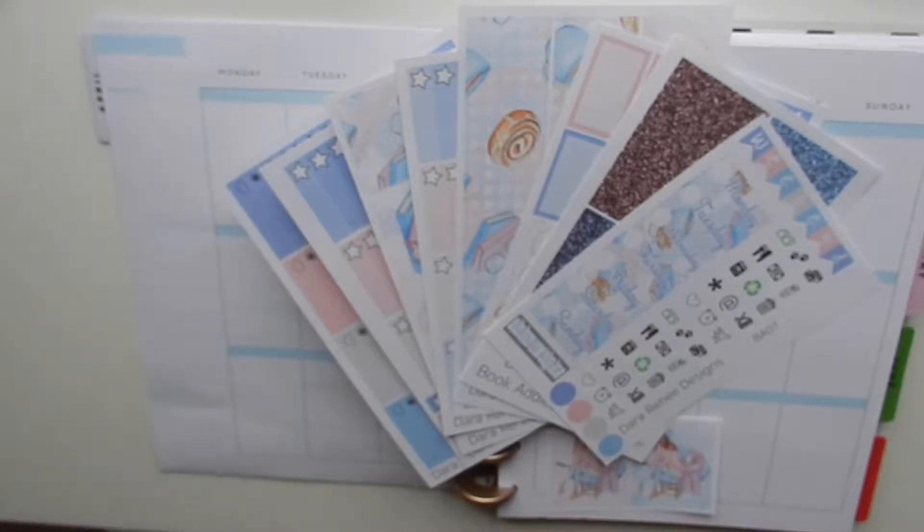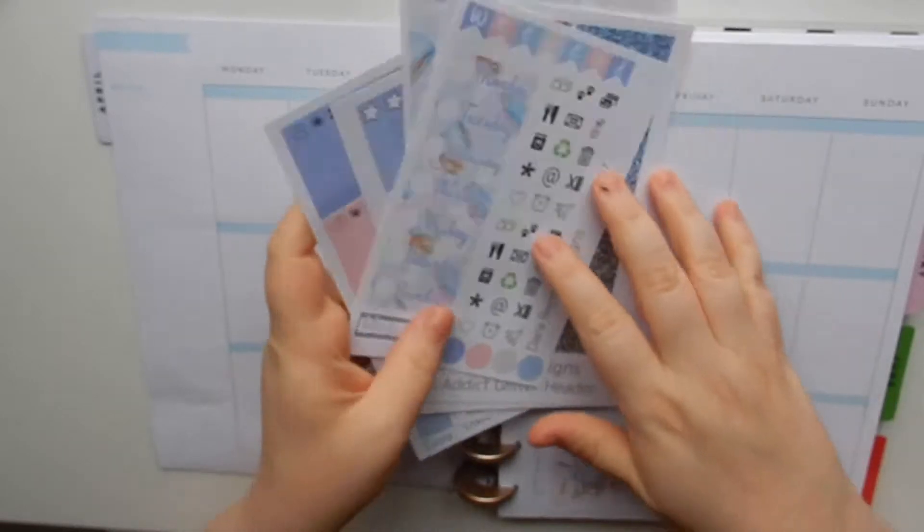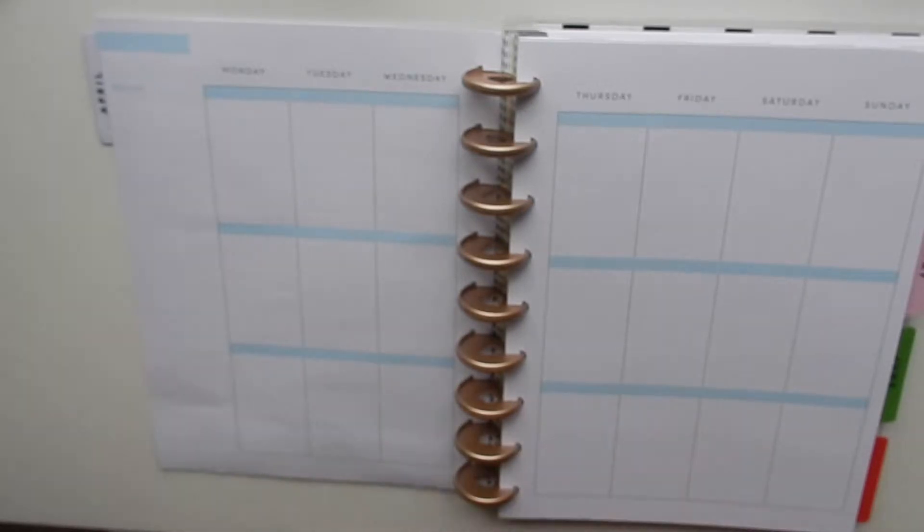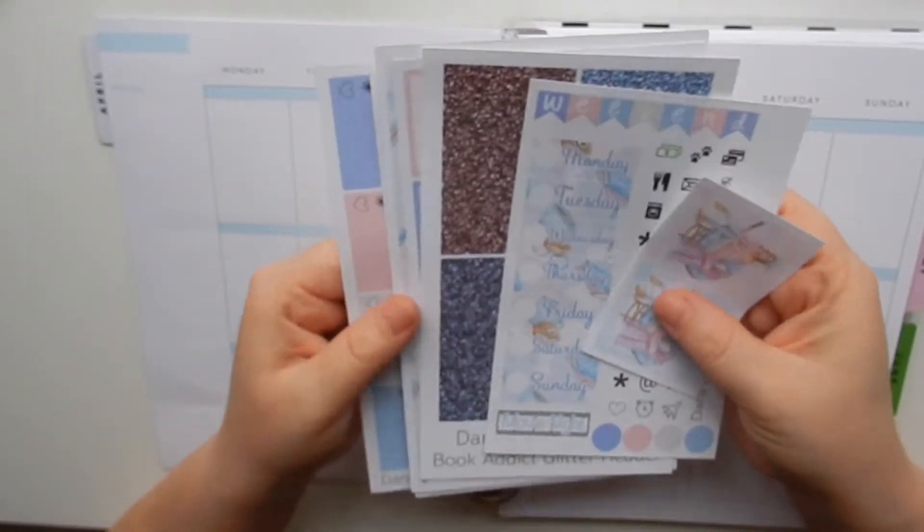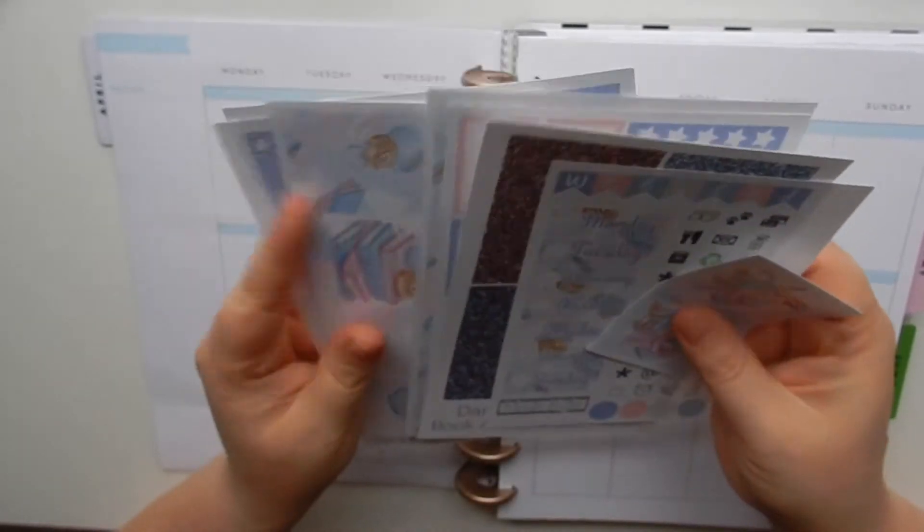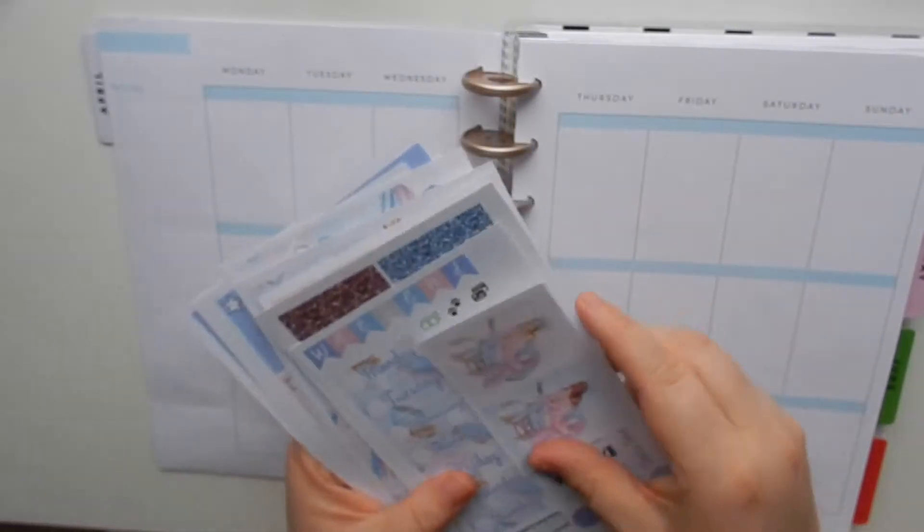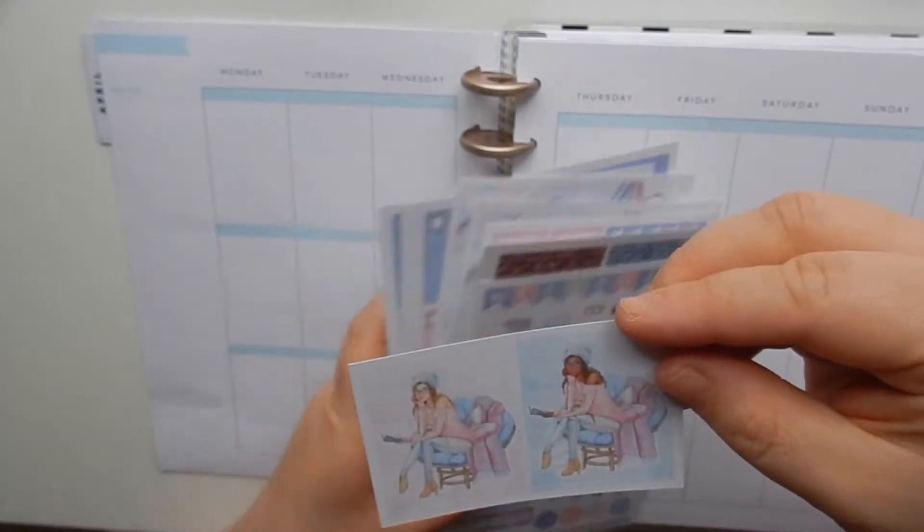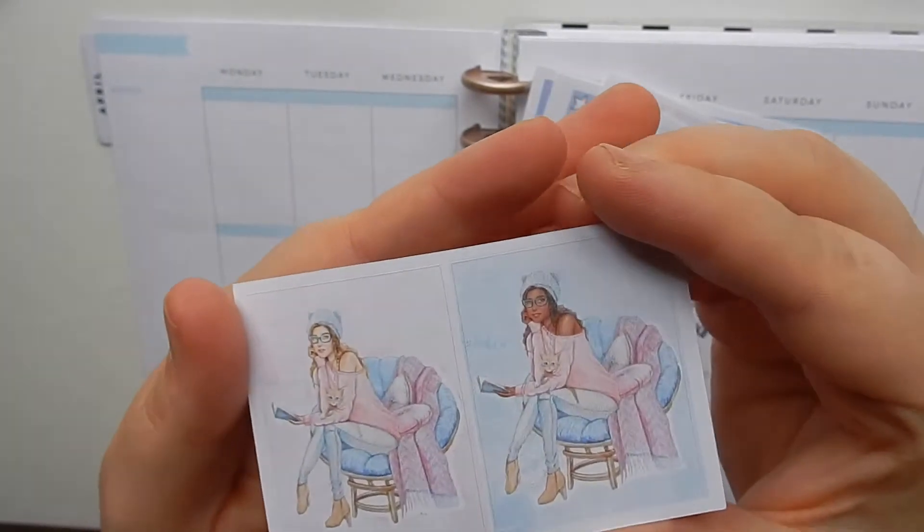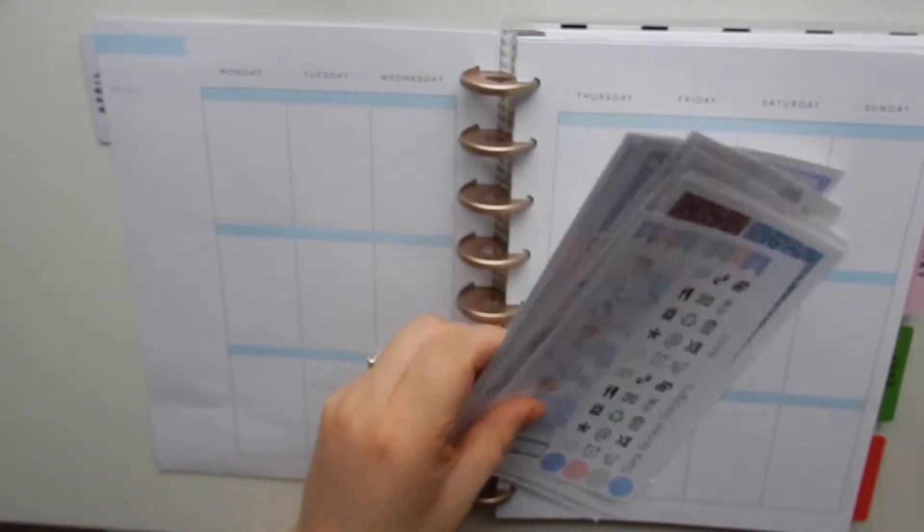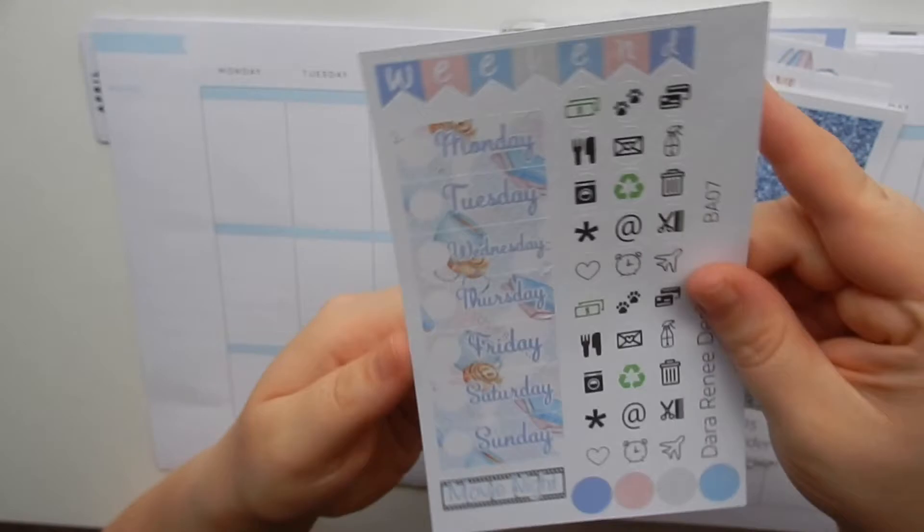Hi guys, welcome back to my channel for another video. Today I am doing another plan with me. I know last week it was kind of random, like I just decided out of nowhere to do another one. But this week I am using my Book Addicts Weekly Kit and it is probably my favorite. It is my favorite kit that I've ever put together. It comes with this freebie, these beautiful girls and their books and their cats. But this kit is just, it's so soft and beautiful.